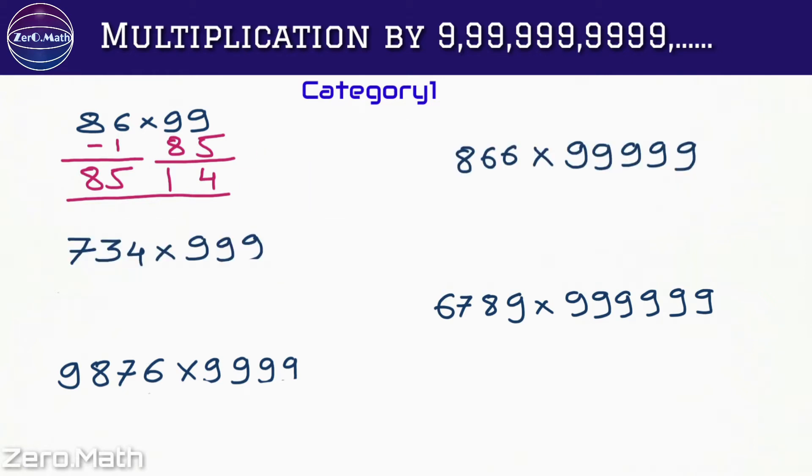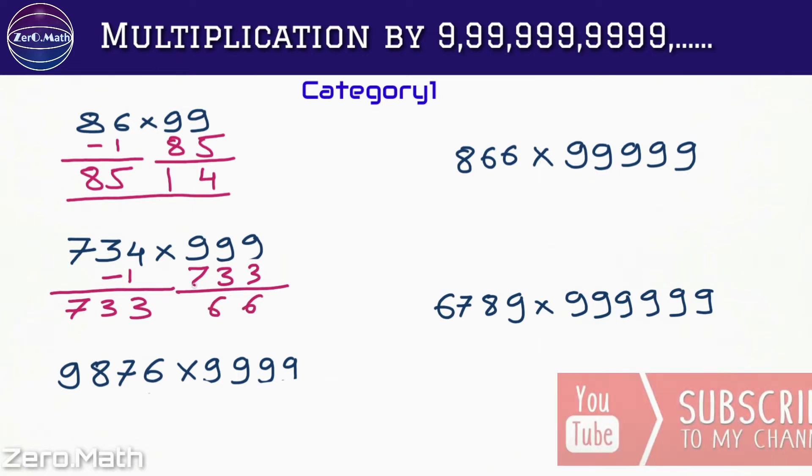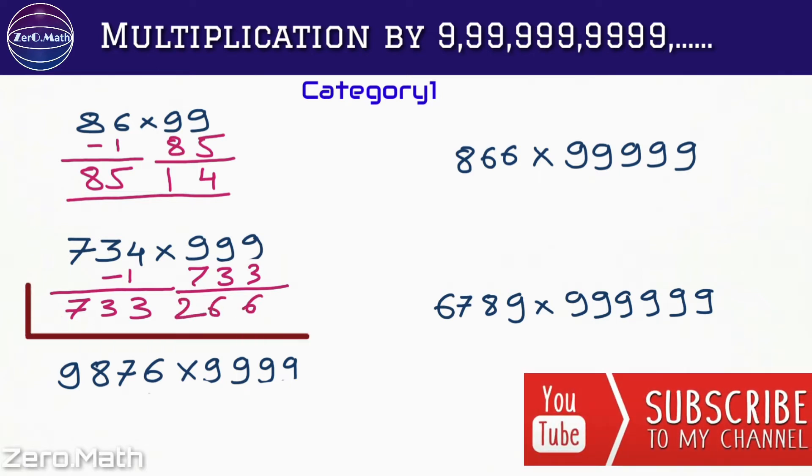Let's try another example. Let's multiply 734 into 999. So again let's subtract 1 from 734, we will get 733. Take this 733 and subtract it from 999. We will get 733266, which is our answer.